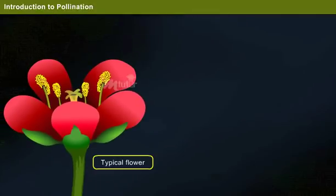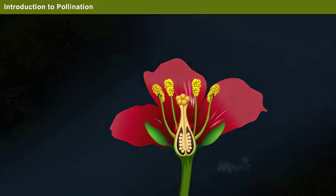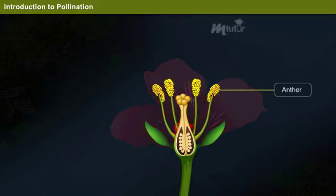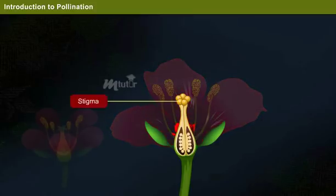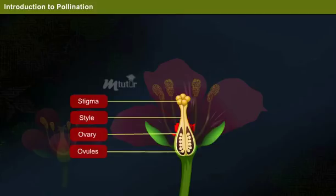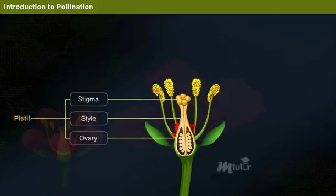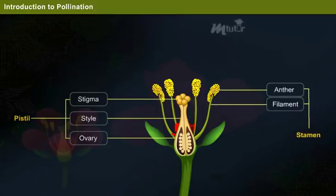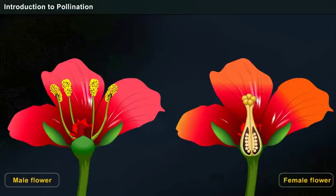The male part of a flower is called the stamen, and the female part is called the pistil. The male part includes the anther and filament. The female part includes the stigma, style, ovary, and ovules. When both male and female parts are present in a flower, it is referred to as a perfect flower. If a flower has either male or female part only, it is referred to as an imperfect flower.